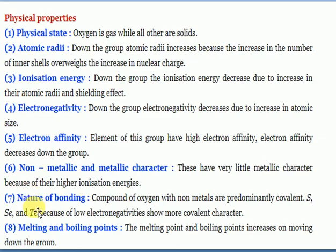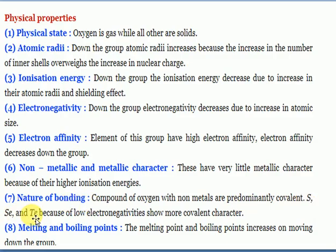Regarding the nature of bonding: compounds of oxygen with non-metals are predominantly covalent - for example, carbon dioxide and sulfur dioxide have covalent nature. Non-metal with non-metal forms covalent bond; metal with non-metal forms ionic bond. Sulfur, selenium, and tellurium, because of low electronegativity, also form covalent bonds.